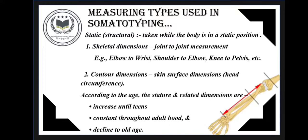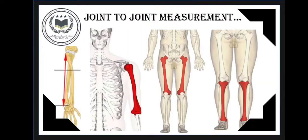According to age, stature and related dimensions increase until the teens, remain constant throughout adulthood, and decline in old age. As shown in the image, joint-to-joint measurements are being taken: elbow to wrist — the radius and ulnar bone; elbow to shoulder — the humerus bone; pelvis to knee — the femur bone; and knee to tarsal — the tibia bone.